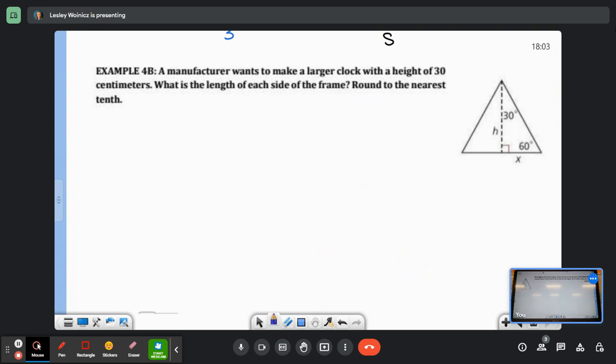A manufacturer wants to make a larger clock with a height of 30 centimeters. What is the length of each side of the frame? Okay, so I guess it's a triangular clock. So what they're telling us is that we have a 30-60-90 degree triangle. Let me redraw the picture with just the important information.